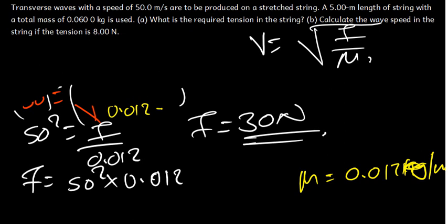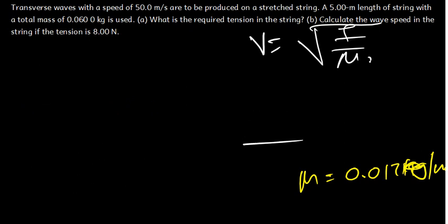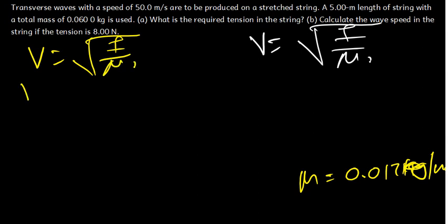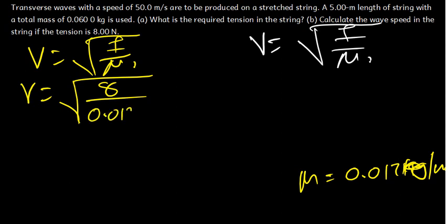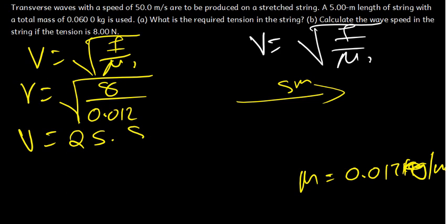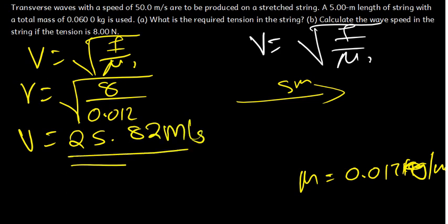If the tension force is 8 newtons, the linear density will not change — it stays at 0.012 kg per meter, because the same string is used: the length remains 5 meters and the mass remains 0.06 kg. Using V = √(F/μ), we get V = √(8 / 0.012), which gives us 25.82 meters per second.